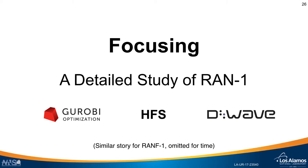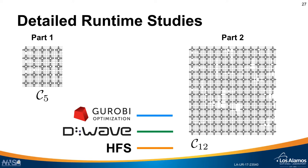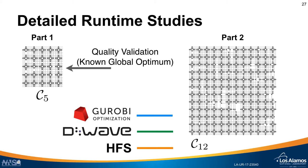So we're going to focus on a detailed study of the RAN-1 case, as it seems to be the most challenging. A similar study for the RAN-fk case shows similar results with just faster runtimes. The detailed study focuses on the C5 graph because Gurobi can prove the global optimal solution there, allowing us to compare the best possible solution against both D-Wave and HFS. In part 2, we do wishful extrapolation — if the trends from part 1 hold, we project performance of D-Wave and HFS on the full C12 chip.